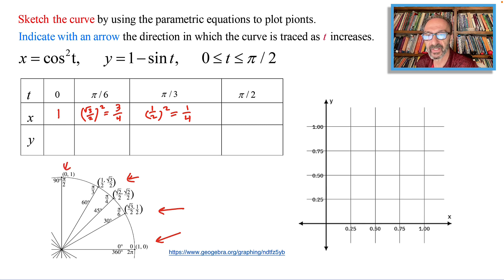Going for the y coordinate, when t equals zero, y is zero, so one minus zero equals one. At π over 6, sine is one-half, so we have one minus one-half, and that is one-half.